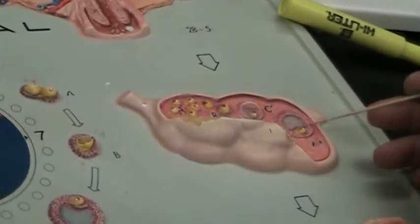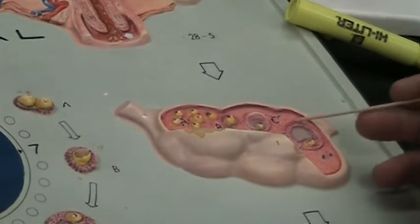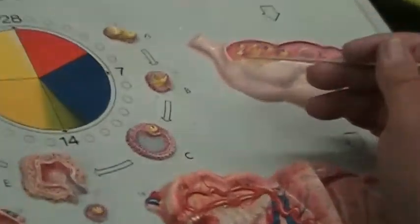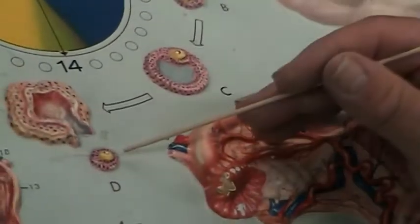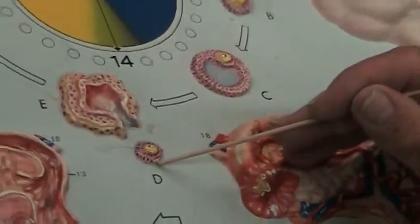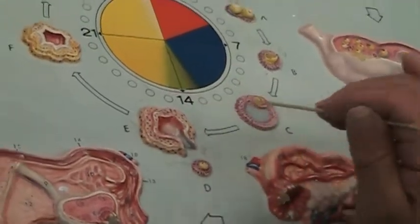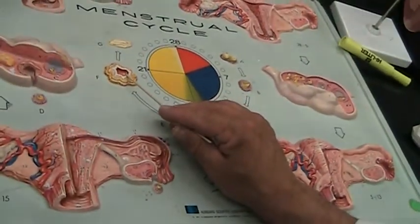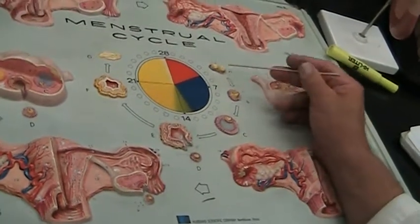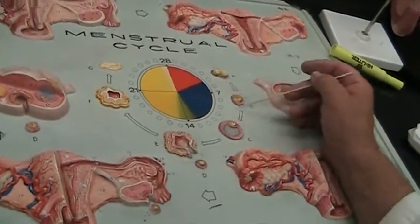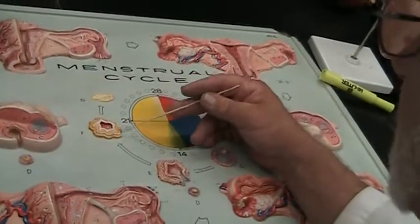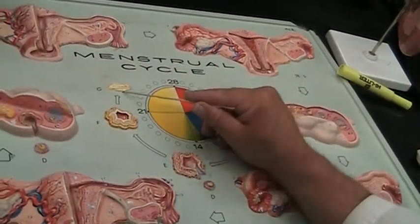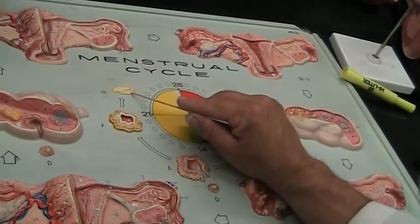Here is a tertiary follicle, or a Graafian follicle, or a gravid follicle. This thing pops open, and there is the egg coming out, and these follicle cells now convert themselves into the corpus luteum. This part of the menstrual cycle, these cells are producing estrogen, this part they're producing progesterone. This thing shrivels up, and it becomes the corpus albicans.